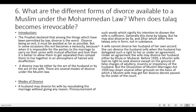Question six: What are the different forms of divorce available to a Muslim under Muslim law? When does talaq become irrevocable? Introduction: The Prophet declared that among the things permitted by law, divorce is the worst. Divorce must be avoided as far as possible, but in some occasions it becomes a necessity — when it is impossible for the parties to the marriage to carry on their union with mutual affection, it is better to allow separation than to compel them to live in hatred. A divorce may be by the act of the husband or the act of the wife. A husband may divorce his wife by repudiating the marriage without giving any reason — pronouncement of words signifying intention to disown the wife is sufficient.